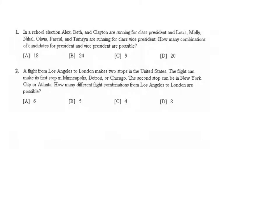In this video I'm going to show some examples of how to determine the number of possible combinations of a set of objects. Question one says in a school election Alex, Beth, and Clayton are running for class president, and Louise, Molly, Nihal, Olivia, Pascal, and Tamsin are running for class vice president. How many combinations of candidates for president and vice president are possible?